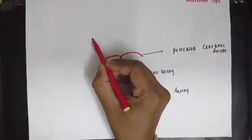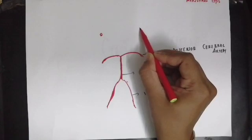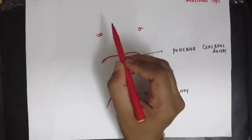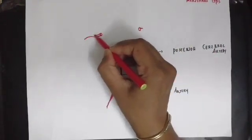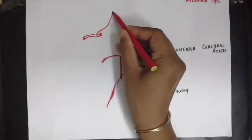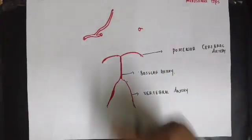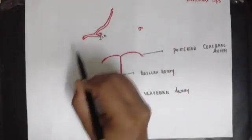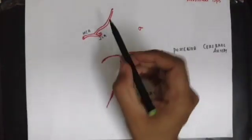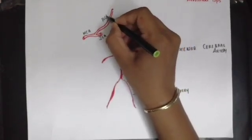On both sides you have the internal carotid artery. On both sides the internal carotid artery gives out two terminal branches: one is the middle cerebral artery, and the other one is the anterior cerebral artery, which is present in the anterior aspect.